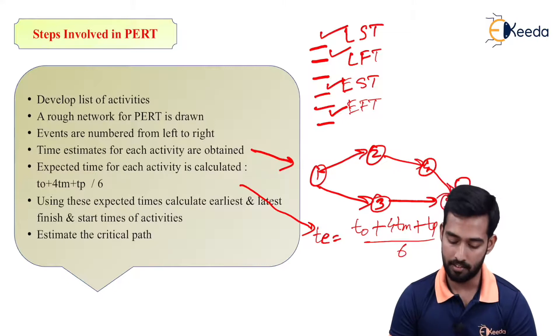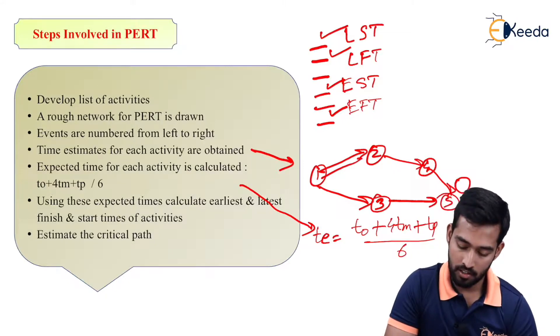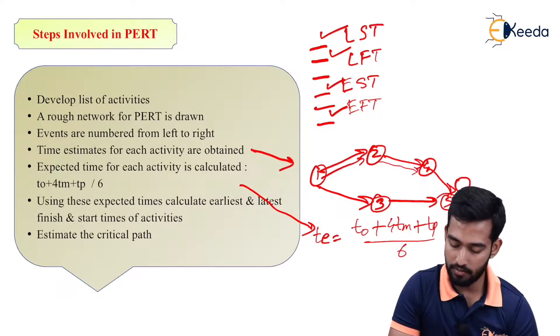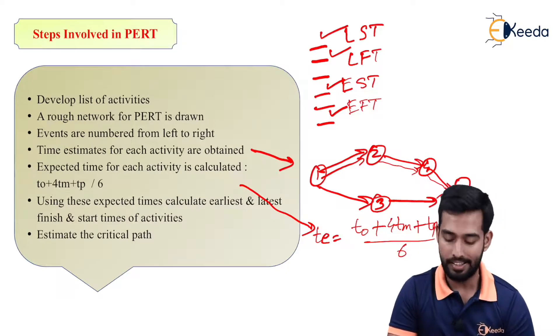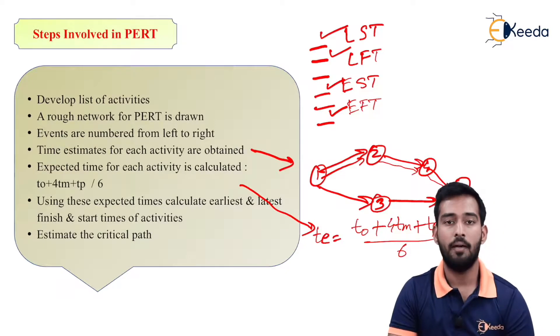Then estimate the critical path. So by knowing the duration of each activity and finding out TE and TL, we can find out the critical path.